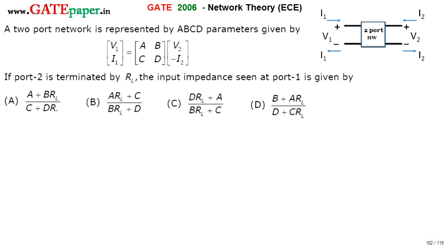But for ABCD parameters, we will take the reference current as minus I2. Minus I2 means the direction is reversed, and we'll assume the current is flowing in this direction. This is minus I2.